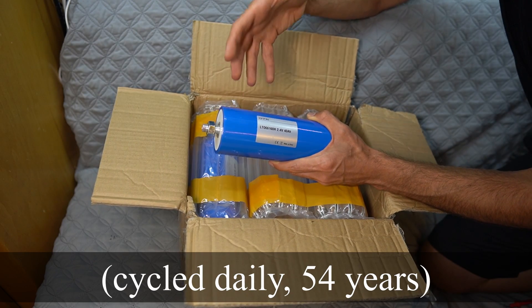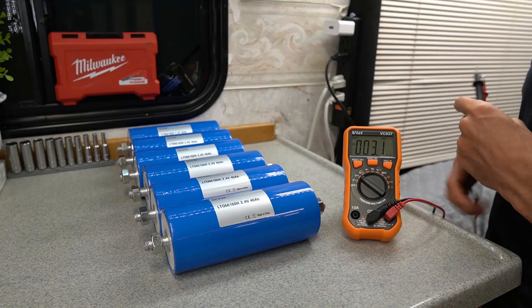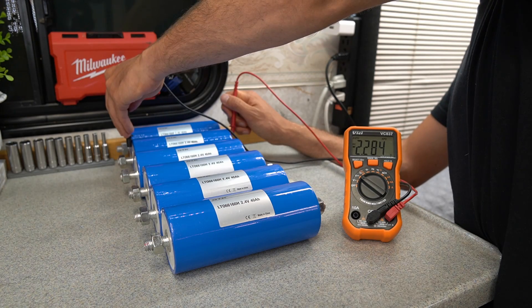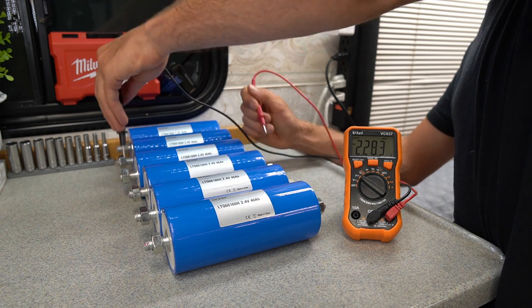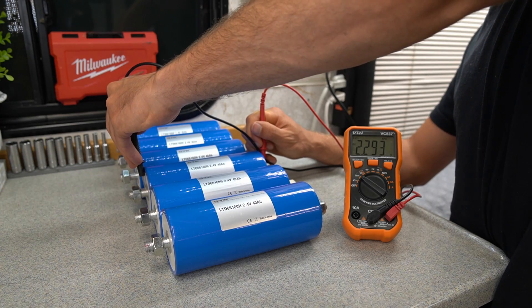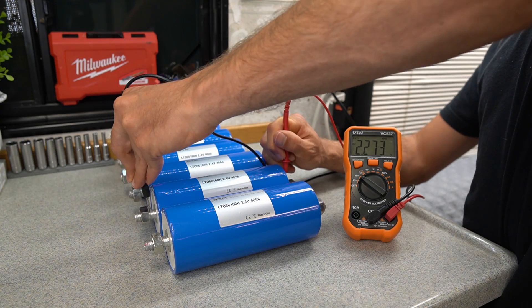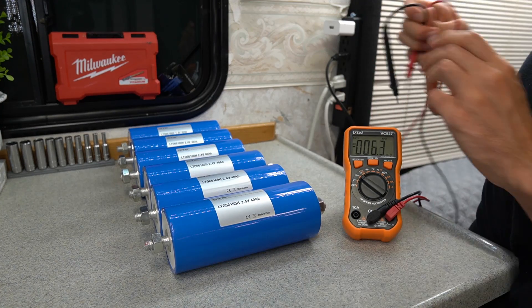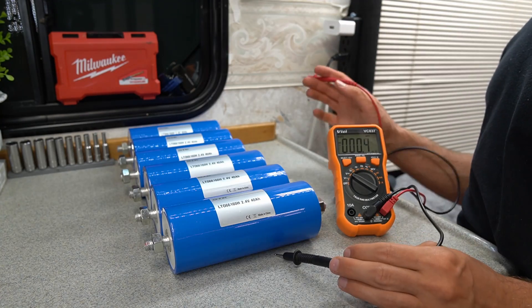I don't have a BMS yet, but we can test the voltage right now. 2.284, 2.284, 2.283, 2.293, 2.27, and 2.28. So most of them are pretty close. Actually they're within 0.02. We're fine.